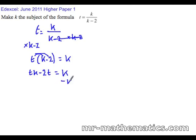Now we want to get all the k's on one side, so we'll subtract k from the right and the left side. So tk minus k minus 2t equals 0.